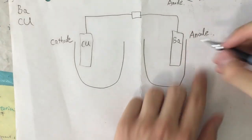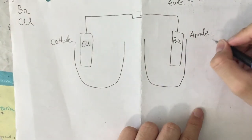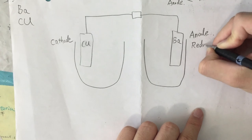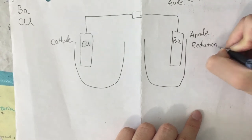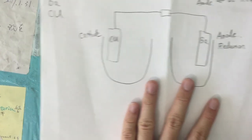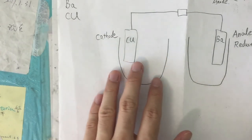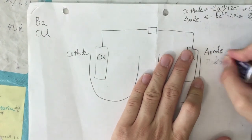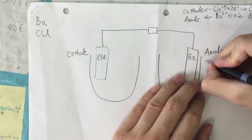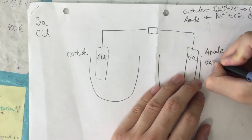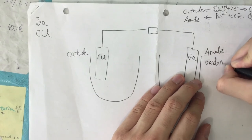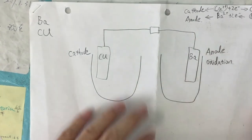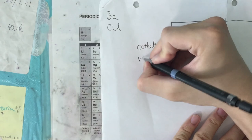So the anode means oxidation — sorry, the anode is oxidation — and the cathode is going to be reduction.